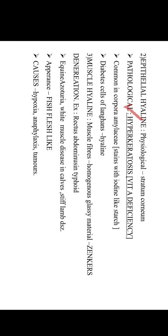Epithelial hyaline is also seen in corpora amylacea, which commonly appears as concentric layers of hyaline epithelial cells in the prostate gland. This corpora amylacea stains with iodine similar to starch. Epithelial hyaline is also seen in islet cells of the pancreas. In muscle hyaline, the affected muscle fibers appear as homogeneous glassy material and undergo so-called Zenker's degeneration. Examples of muscles undergoing this degeneration are rectus abdominis in typhoid, equine azoturia, white muscle disease in calves, and stiff lamb disease in lambs.